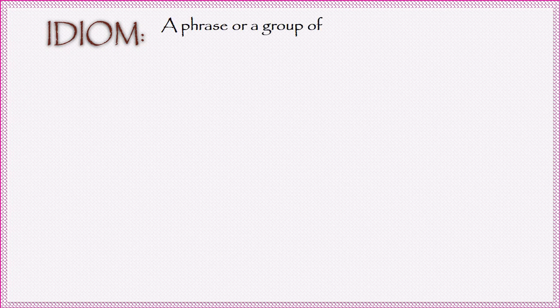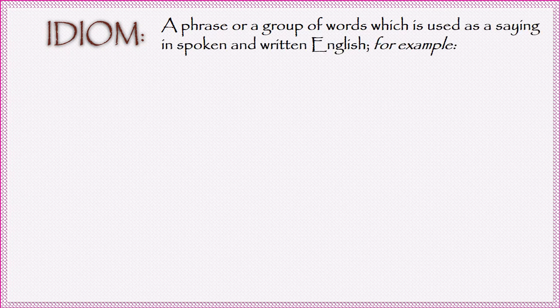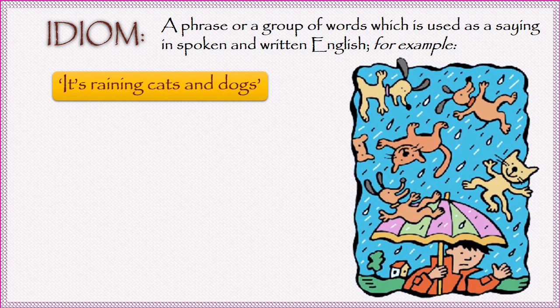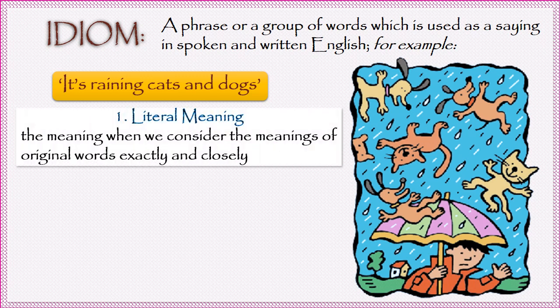First, let's discuss what the term idiom means. An idiom is nothing but a phrase or a group of words which is used as a saying in spoken and written English. It conveys some meaning to the listener or the reader. Let's take for example the phrase, it's raining cats and dogs. There could be two types of meanings for such a phrase.